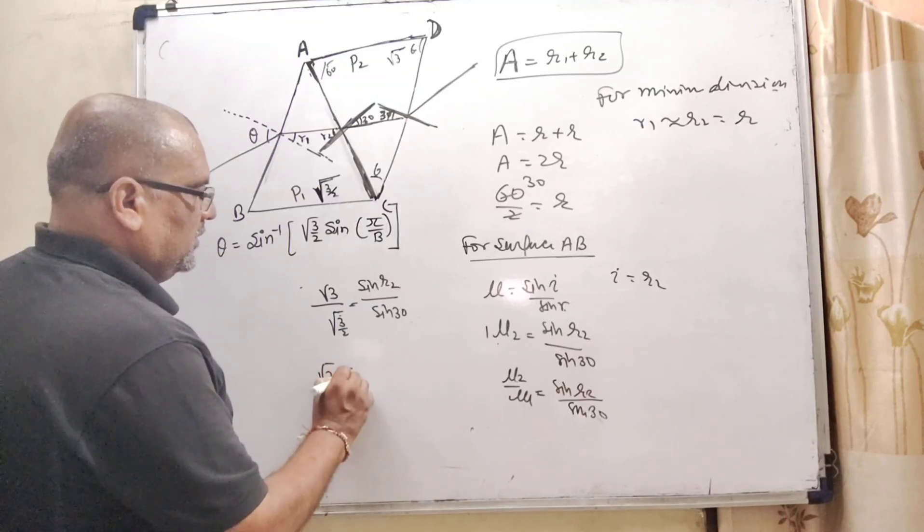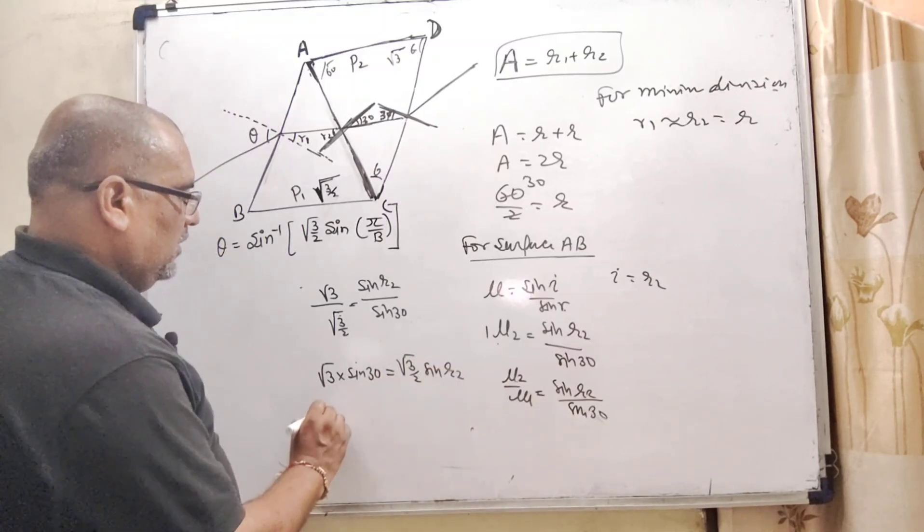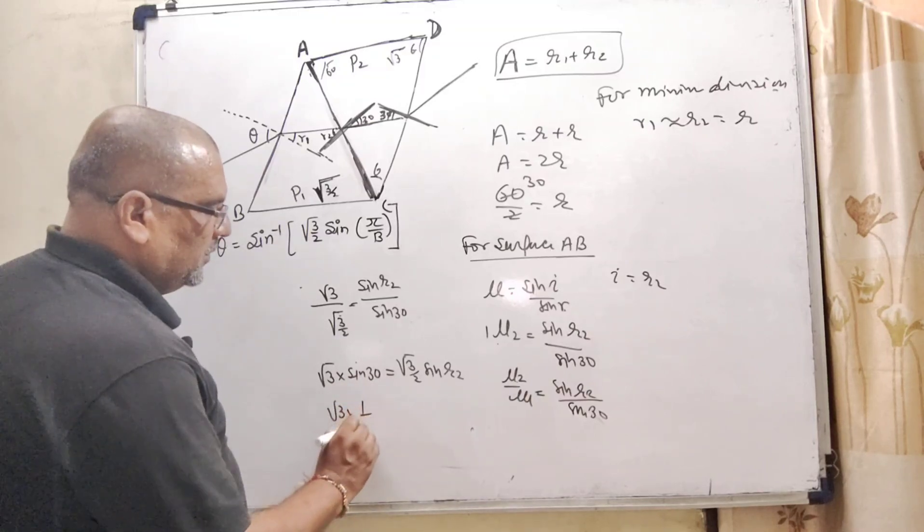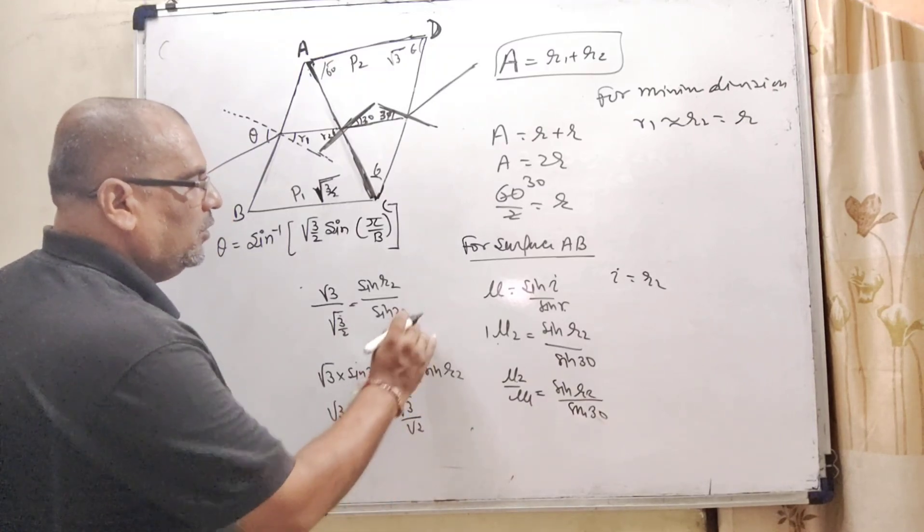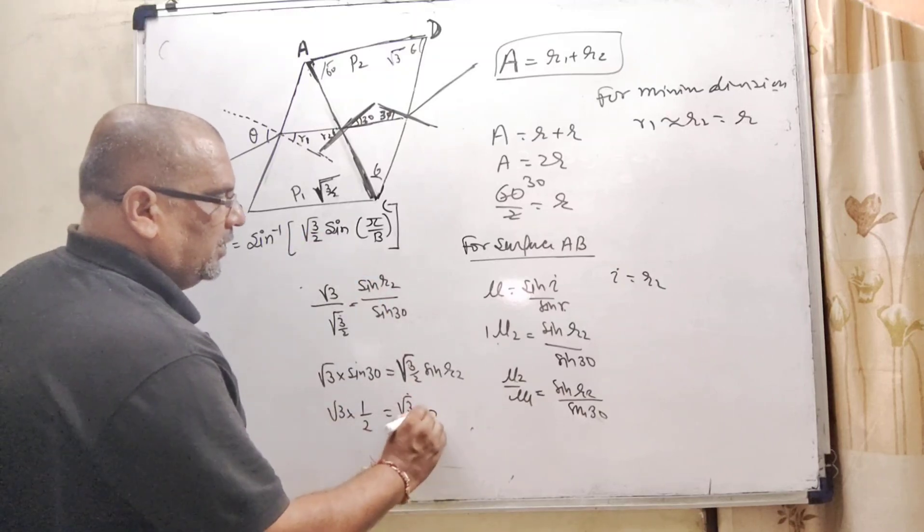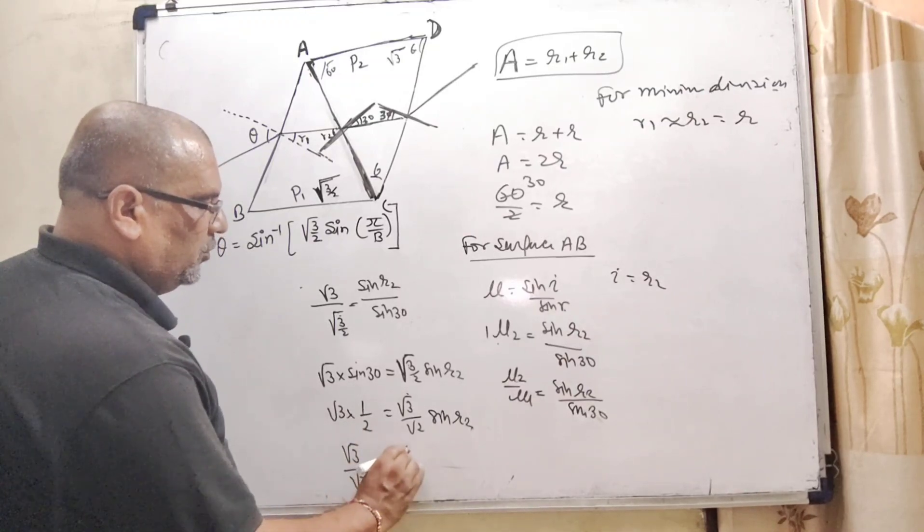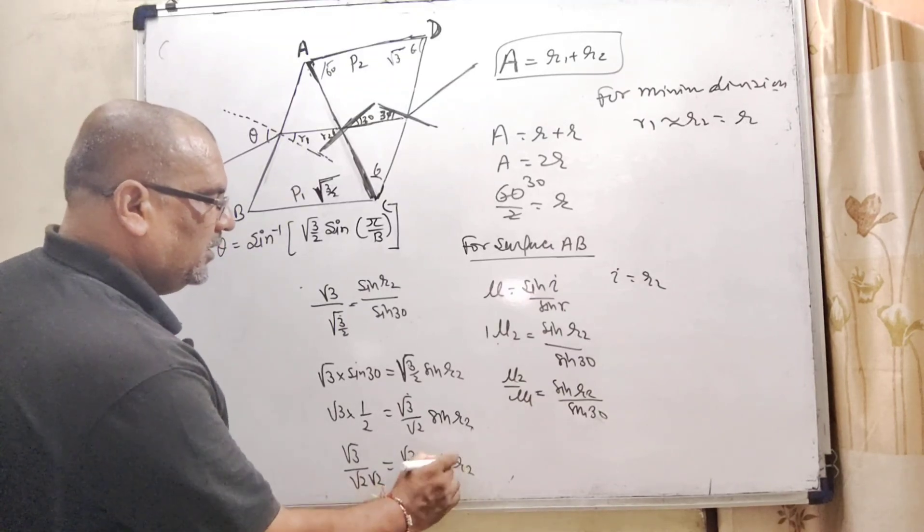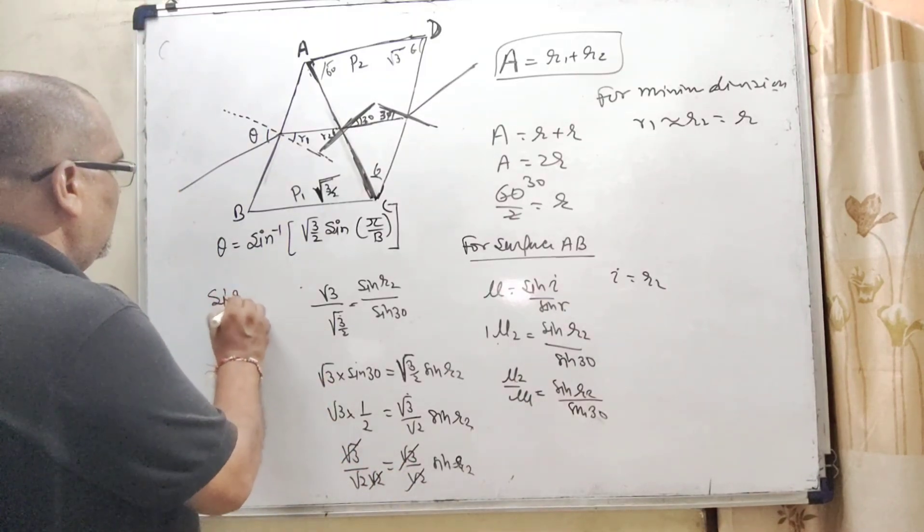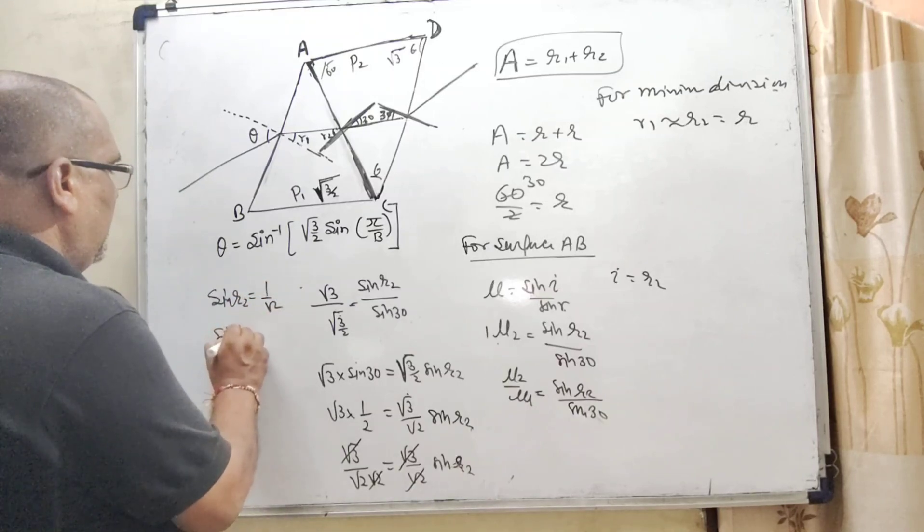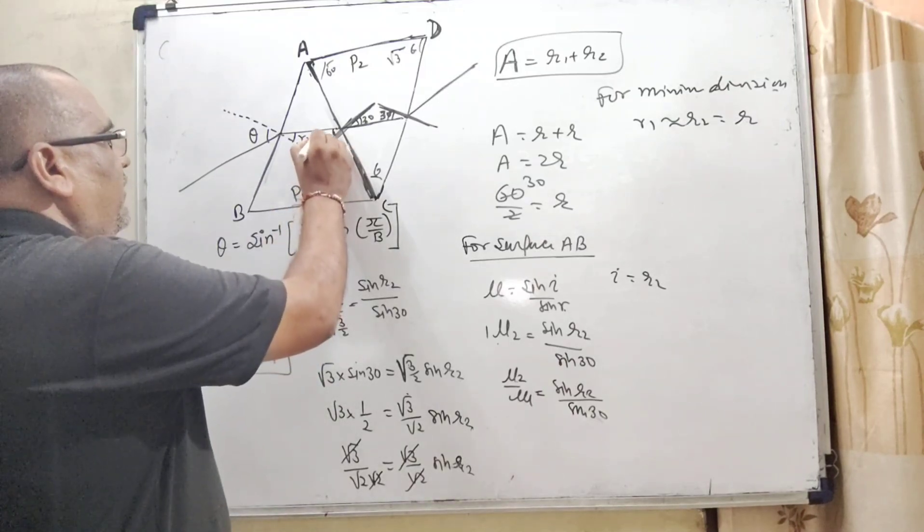Here root 3 sin 30 is equal to root 3 by 2 sin R2. Root 3 sin 30 is 1 by 2. Root 3 by root 2, it can be written as whole root of 3 by 2, not only root 3 by 2, that is very important. So here sin R2, root 3, here 2 can be written as 2 times root 2 root 2 is equal to root 3 by root 2 sin R2. Root 3 cancel out, root 2 cancel out, then sin R2 is equal to 1 by root 2 means sin R2 is equal to sin 45. It means R2 equal to 45. So here we get R2 as 45.